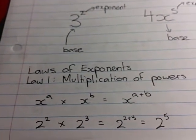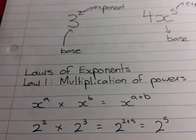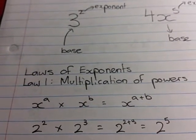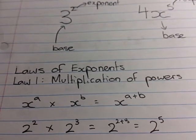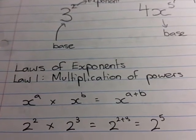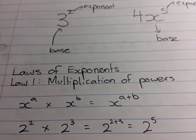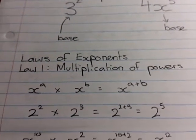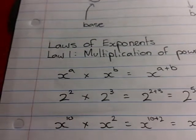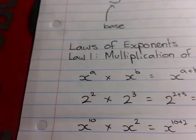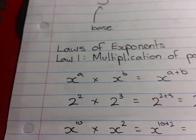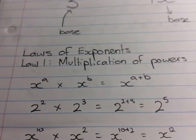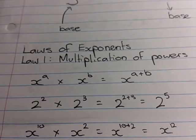So if I had, for example, 2 to the 2 times 2 to the 3, I can actually combine them. The base will still be 2, and I can add the exponents, 2 plus 3, giving me a final simplified answer of 2 to the 5. Another example, x to the 10 times x to the 2, you can add the exponents since they do have the same base, giving me an answer of x to the 12.